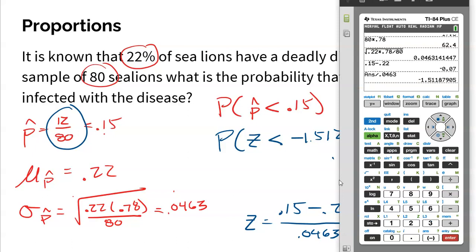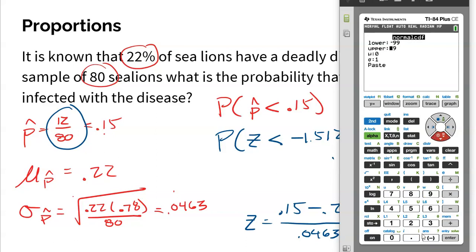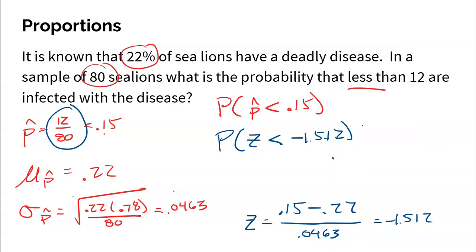Since this follows a normal distribution, I go to normalcdf. I start at negative 99 (my negative infinity) and go up to −1.512. I get 0.0653. So there is about a 6.5% chance that I collect a random sample of 80 sea lions and fewer than 12 of them — under 15% — have this deadly disease.